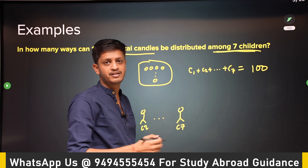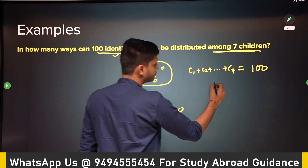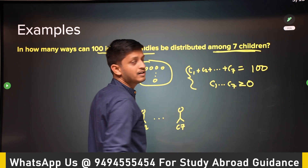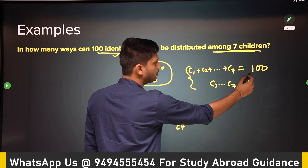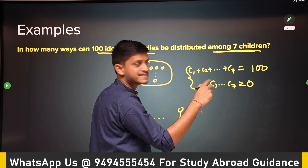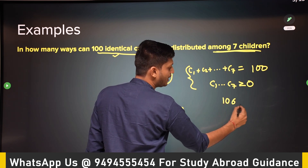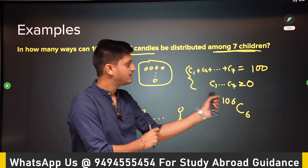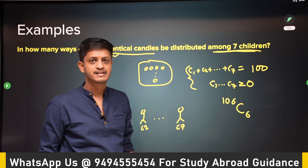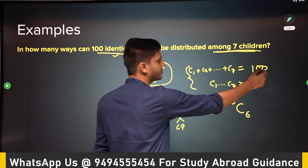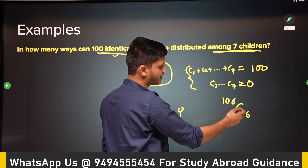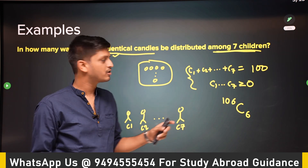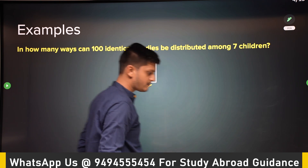All c1 through c7 can be greater than or equal to zero. To make seven partitions you insert six sticks, so you create 106 boxes and insert six sticks to get seven partitions. The number of solutions is 106 C 6. Using the formula: n=7, r=100, giving n+r−1 choose n−1 = 106 C 6. That is a large number but that is the answer.